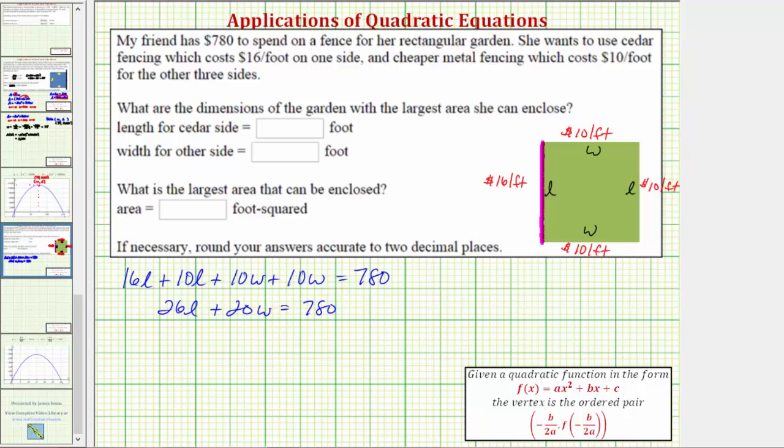Our goal here is to maximize the area of the garden, where the area A is equal to length times width. Because we want to maximize the area, we need to write the area equation in terms of one variable, rather than two. To do this, we'll use this equation here, which is called the constraint, to solve for L or W. Then we'll make a substitution into the area equation.